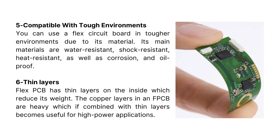Six, thin layers. Flex PCB has thin layers on the inside which reduce its weight. The copper layers in an FPCB are heavy, which if combined with thin layers becomes useful for high power applications.